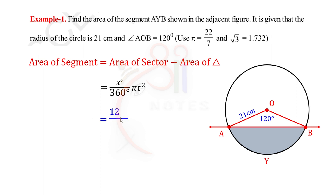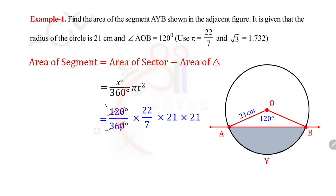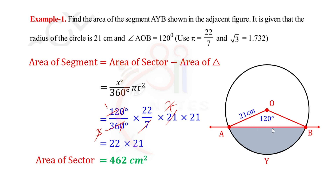So we calculate: 120 by 360 into 22 by 7 into r squared. r value is 21, so r squared is 21 into 21. After cancellation: 120 by 360 simplifies to 1 by 3, and 7 cancels with 21. This gives 22 into 21, which equals 462 square centimeters. This is the area of the sector.